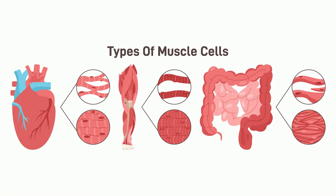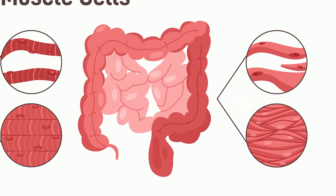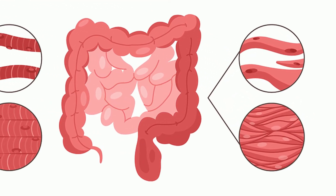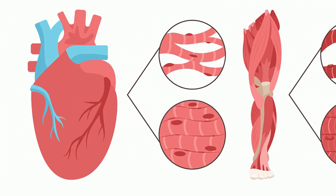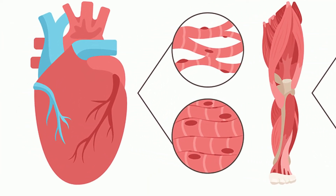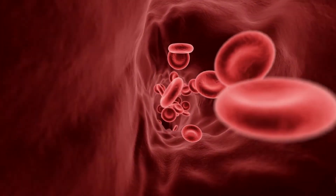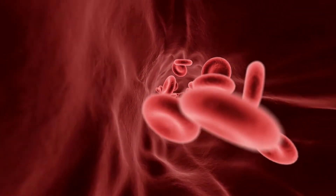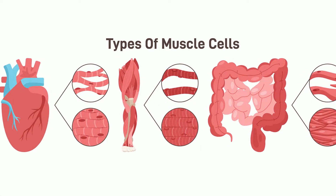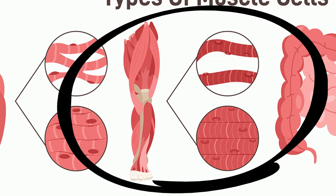Muscle cells come in three different types: smooth, cardiac, and skeletal. Smooth muscles help with internal movement, like in your intestines. They look different than cardiac muscles, which are found only in the heart and are responsible for pumping blood throughout the body. Skeletal muscles look even different, and they are found attached to the bones and aid in body movement.